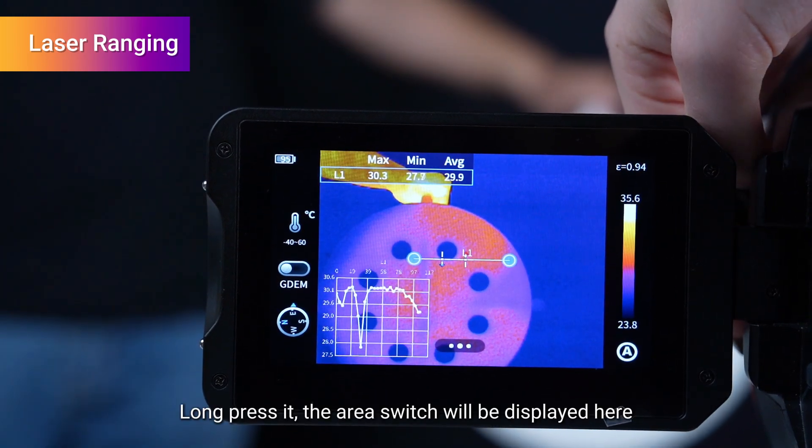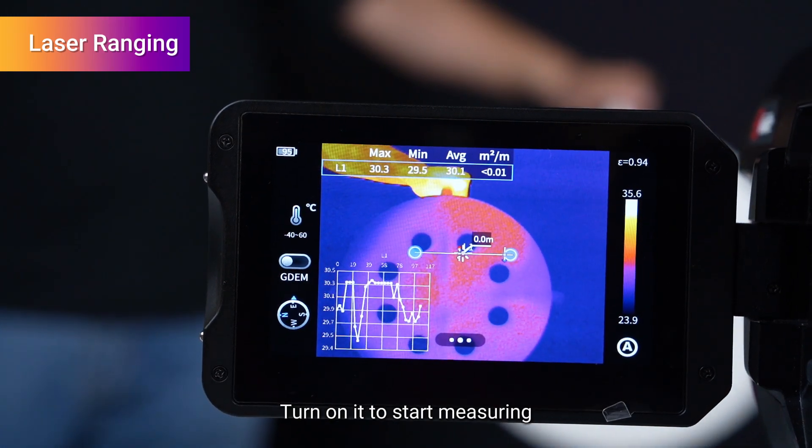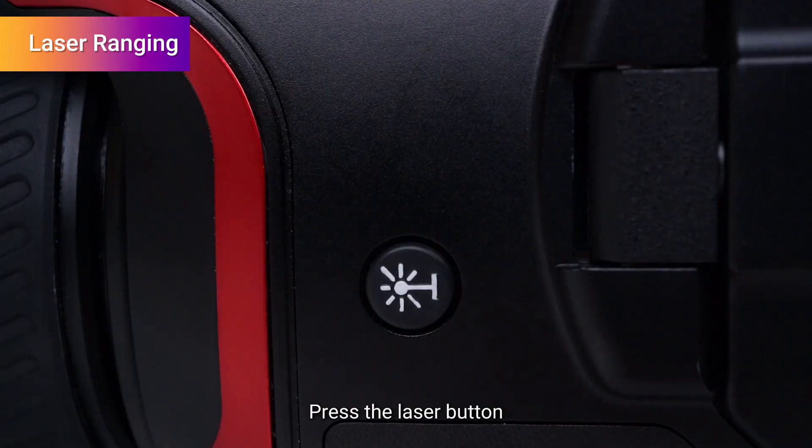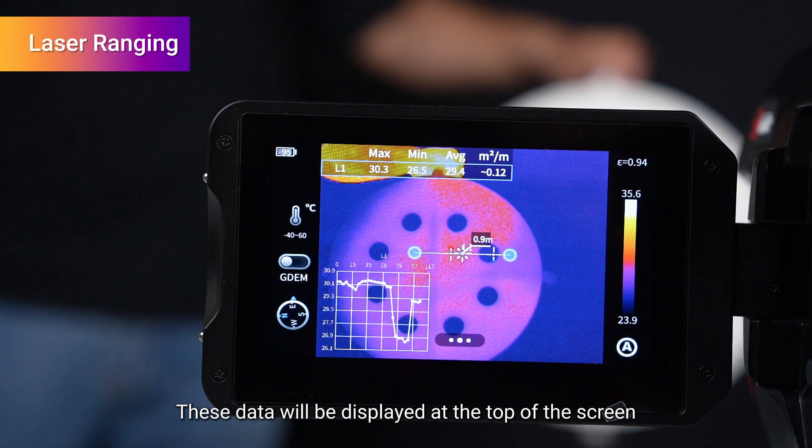The area switch will be displayed. Turn it on to start measuring. Press the laser button and the data will be displayed at the top of the screen.